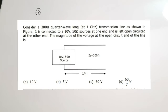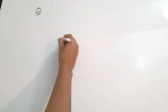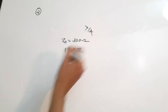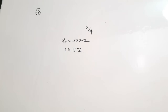The second question: a 300-ohm, quarter-wave-long (lambda/4) transmission line at 1 GHz. The characteristic impedance Z0 = 300 ohm and frequency = 1 GHz. It is connected to a 10-volt, 50-ohm source at one end and is left open-circuited at the other end. We need to find the magnitude of voltage at the open-circuit end of the line.